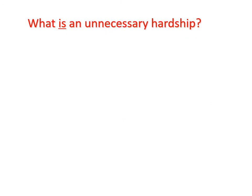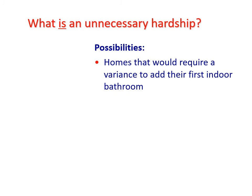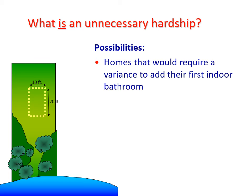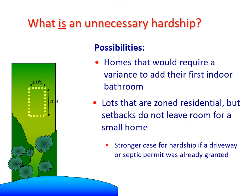So I'm sometimes asked, what is an unnecessary hardship? Here are a few possibilities. Homes that would require a variance to add their first indoor bathroom — that would be considered a hardship because in today's day and age, people expect indoor plumbing. Here's a second situation: if a lot is zoned residential but the setbacks don't leave room even for a small home, the property owner would have a stronger case if they had already been granted permits for other things typically done on residential lots, such as a driveway permit or a septic permit.